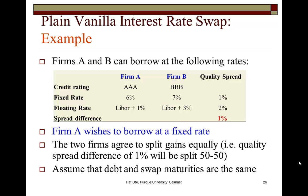In this example, Firm A is a AAA rated firm, while Firm B has a credit rating of BBB. As such, Firm A can borrow at a lower rate than B in all cases.